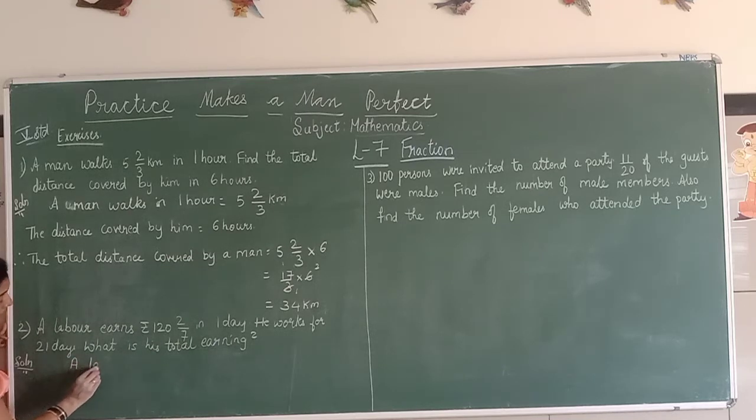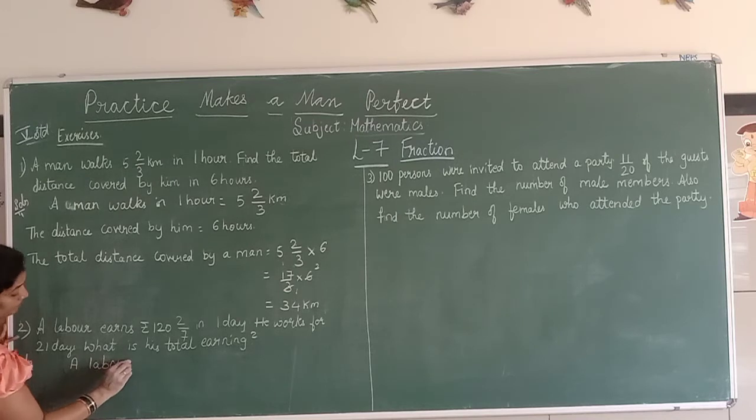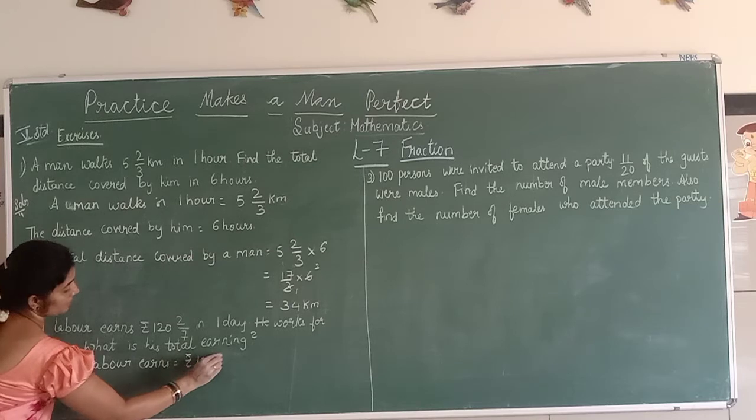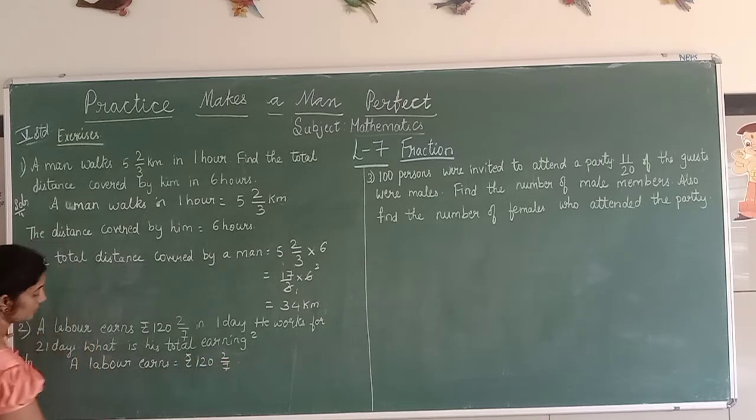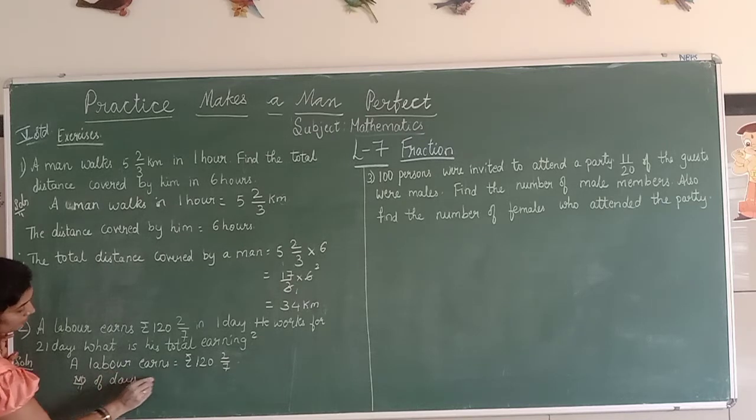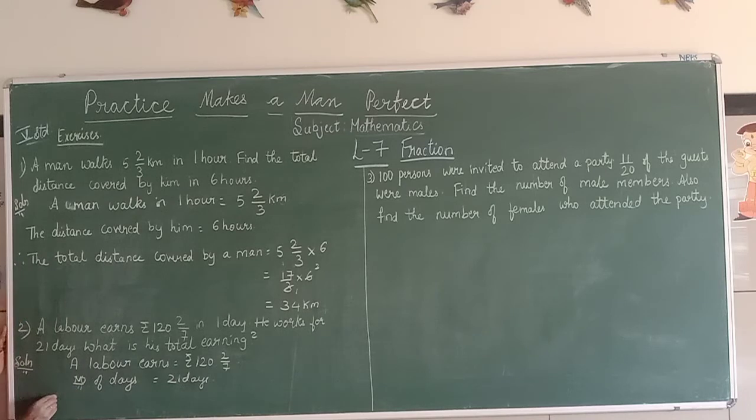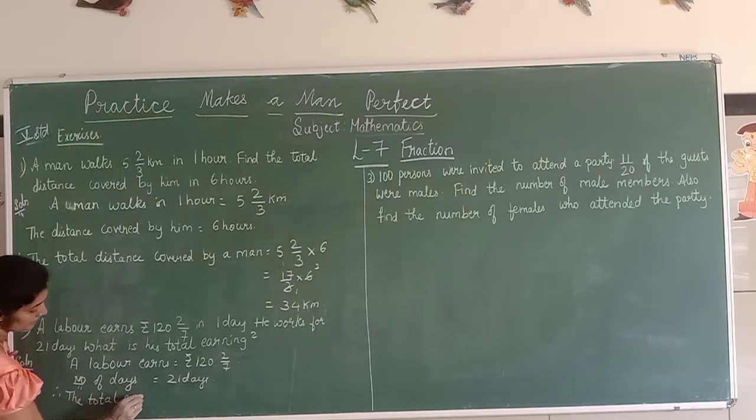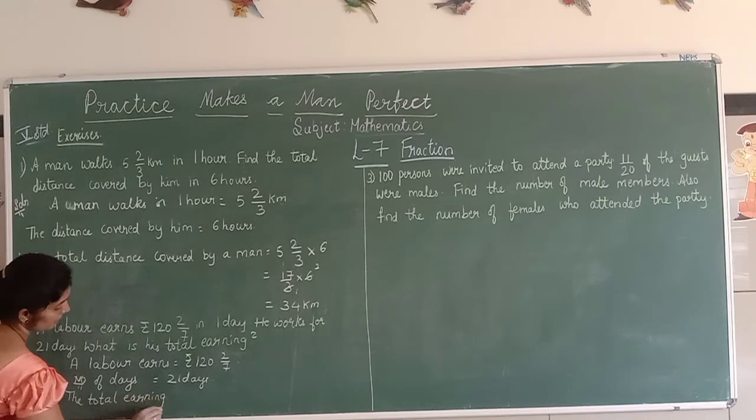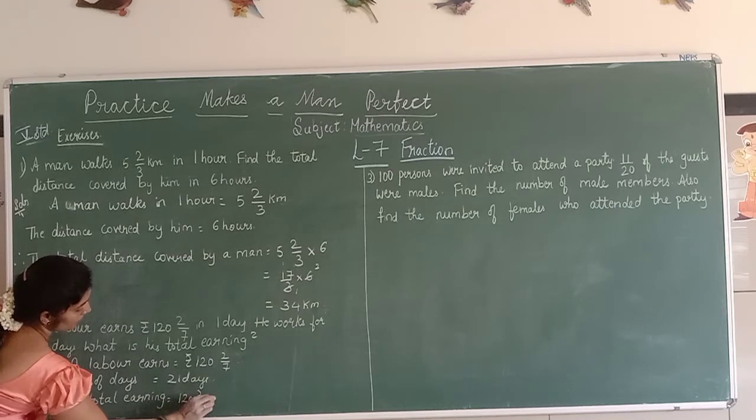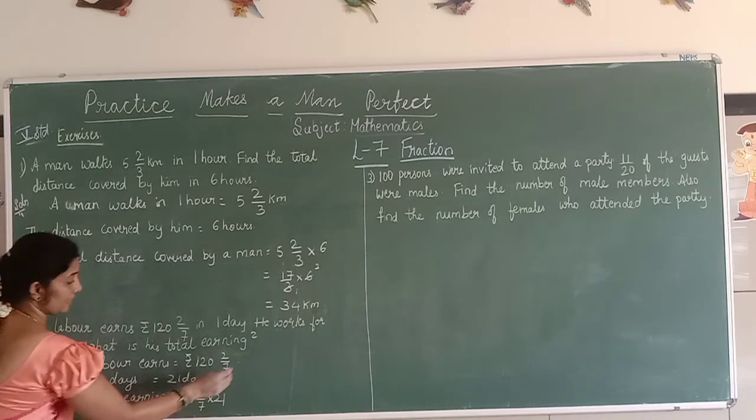The laborer earns rupees 120 2/7 per day. Number of days is 21. We want to find the total earnings. So 120 2/7 into 21. First I convert to improper fraction.